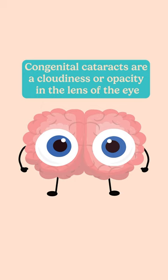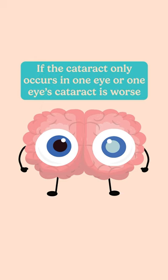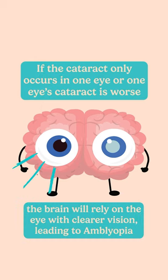Congenital cataracts are a cloudiness in the lens of the eye that prevents light from entering onto the retina through a clear path. If the cataract only occurs in one eye, the brain will rely on the eye with clearer vision, preventing the other eye from developing properly.